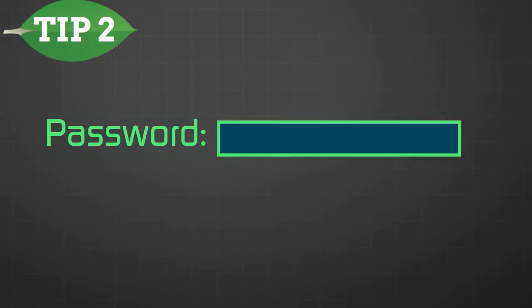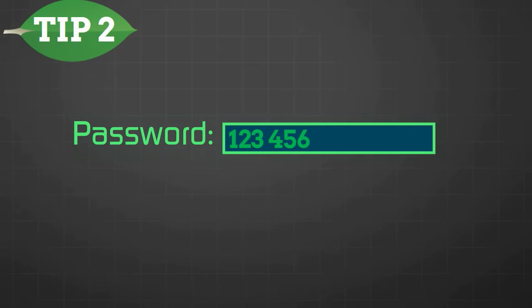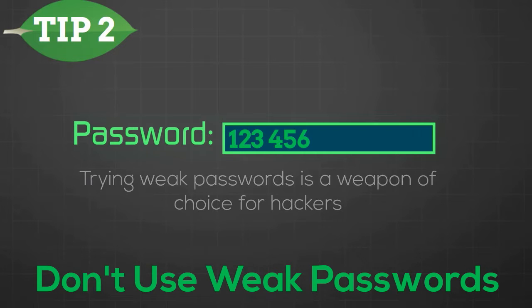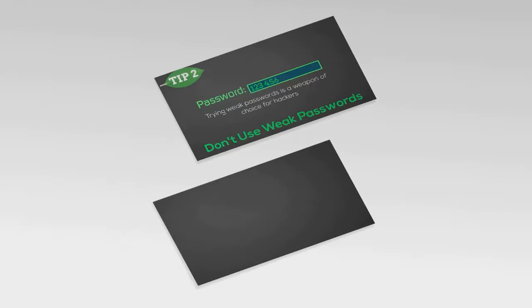The single most common password used on the web is 123456. It's often easier to keep it simple when developing, but weak passwords are the next weapon of choice for hackers. Since MongoDB does not yet offer a lockout option for multiple attempts, a weak password can be easily figured out in minutes.